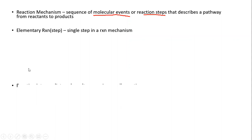To write the reaction mechanism, we use elementary steps, which is a single step in the reaction mechanism. For example, step one could be a molecule of A reacting with another molecule of A to form molecule C — that's an elementary step. Then step two might be molecule C reacting with molecule B to form another product. We use these elementary steps to produce the reaction mechanism.